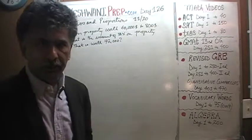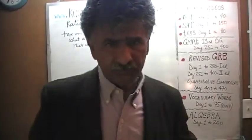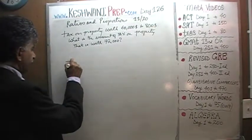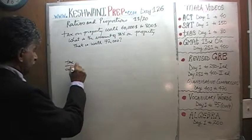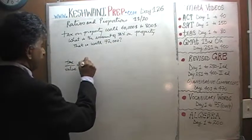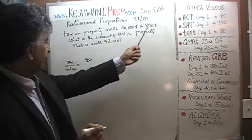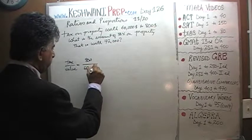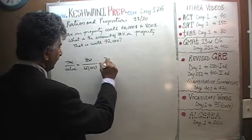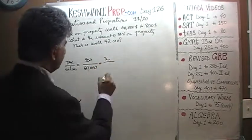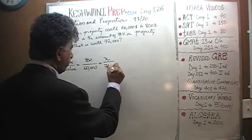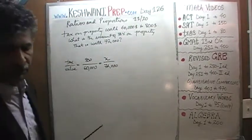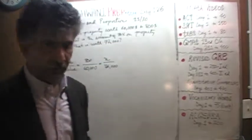Alright, here we go. There are a couple of ways we can go about it. One way is to simply set it up as a proportion problem in a very traditional way, which is tax over the value. We are told that the tax is $800 on a property that is worth $60,000, and the question is how much is the tax on a property that is worth $72,000? Then cross multiply and solve for x. This is one way of doing it, it's a very traditional way, very academic way. There is nothing wrong with it.